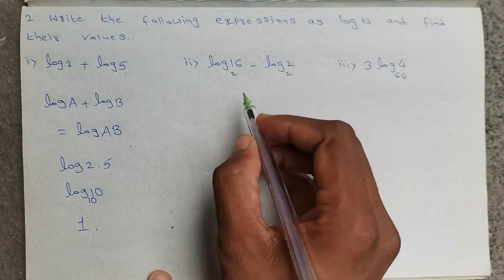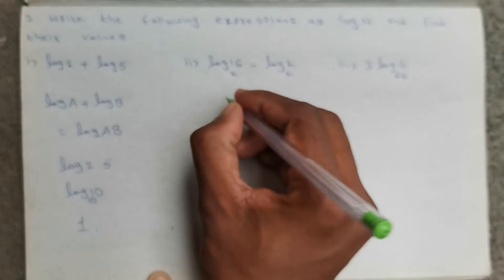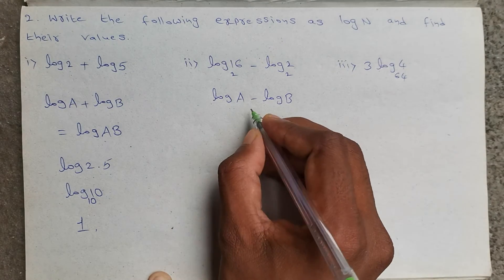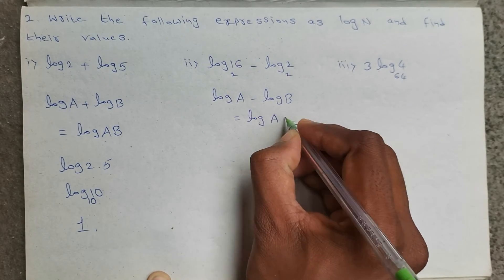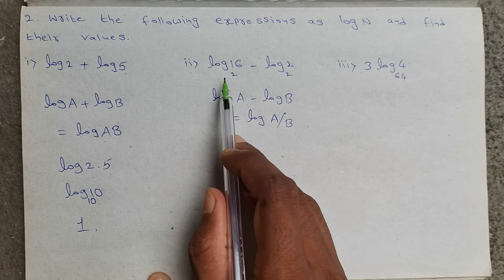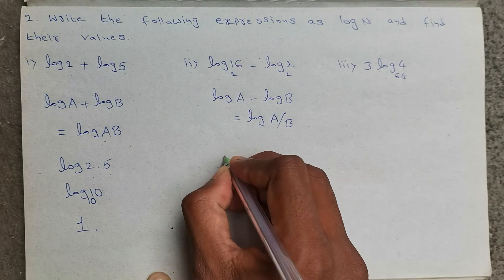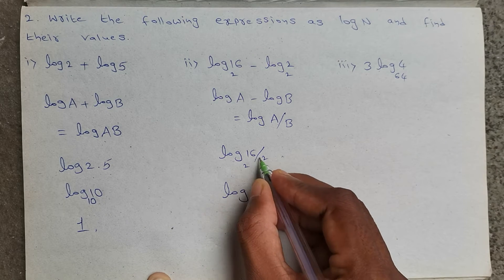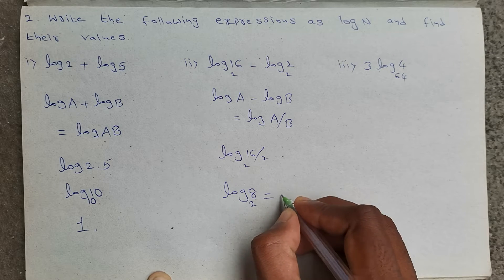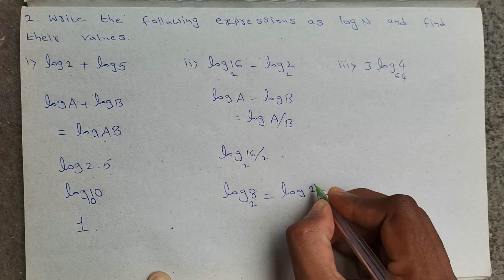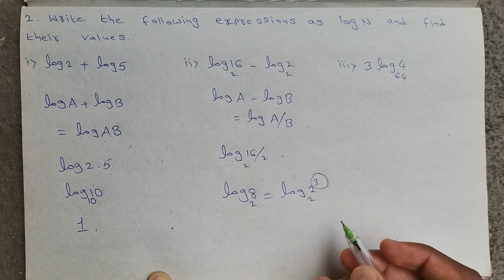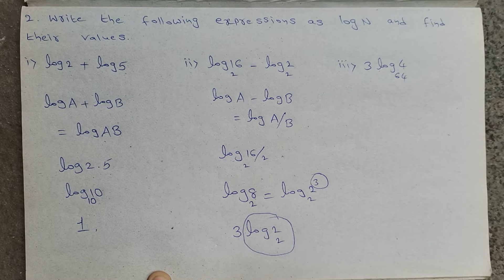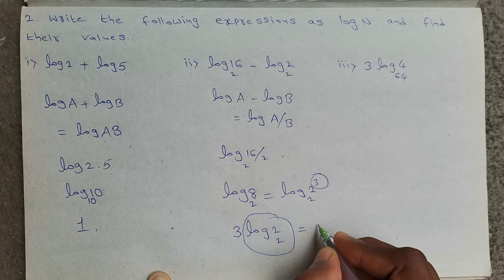Next. Log 16 base 2 minus log 2 base 2. It is in the form of log a minus log b, which equals log (a/b). So log 16 base 2 minus log 2 base 2 can be written as log (16/2) base 2, which is log 8 base 2. Now 8 can be written as 2 power 3, base 2. This power 3 comes to the front: 3 into log 2 base 2. Log 2 base 2 value is 1. So 3 into 1, which is nothing but 3.